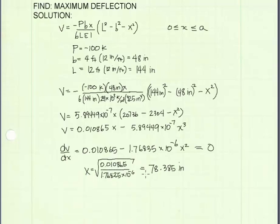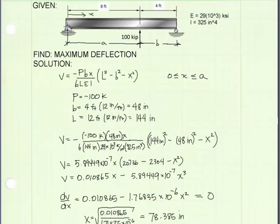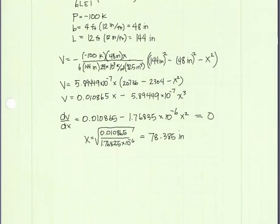Now solving for x, I get a value of x is equal to 78.385 inches. What that means is that if we come over a distance of x equals to 78.385, we'll be at our point of maximum deflection. That's where our slope goes to 0.